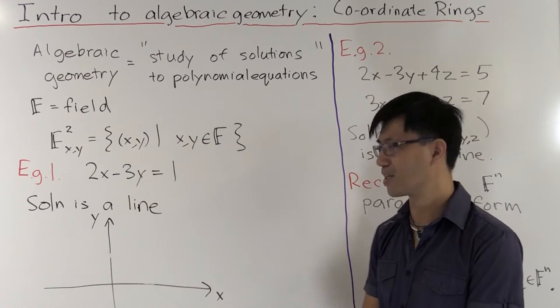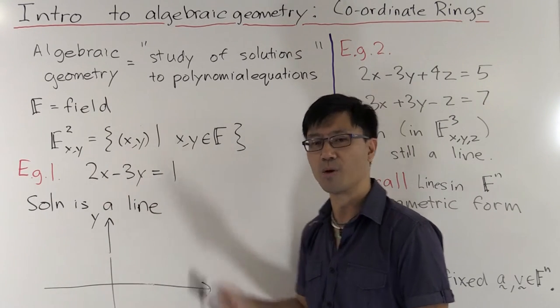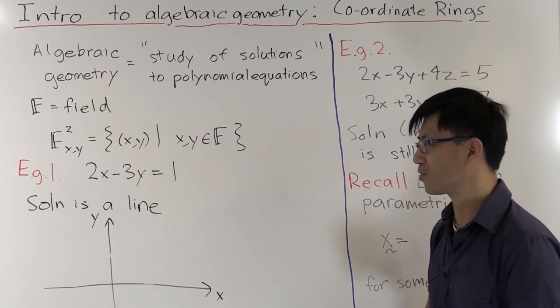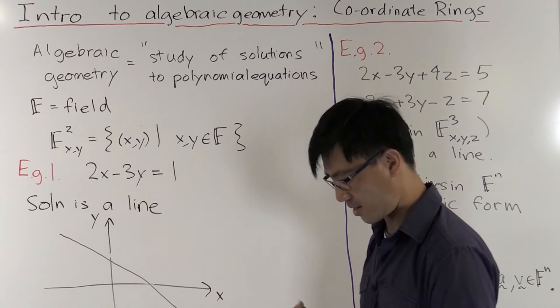Okay, so what's the simplest linear equation that you can think of? It'll be something like 2x minus 3y equals 1. And we all know what that looks like. It's just a line. So it's a line inside the x, y plane like that.